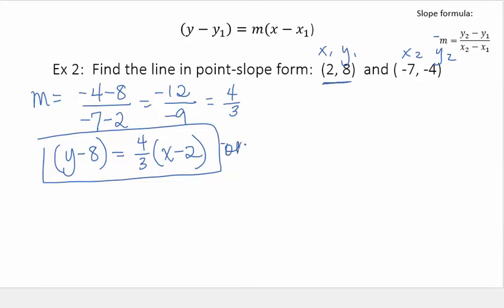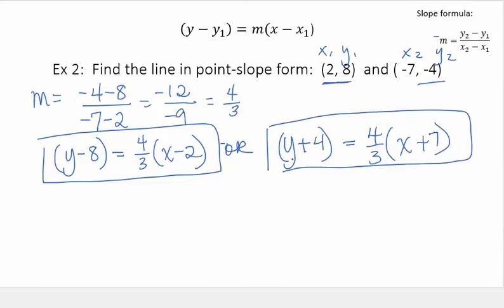The other one using this point. Y minus the y, which was negative. So minus a negative means plus 4, equals 4 thirds x minus negative 7 means plus 7. So again, depending on which point you use for your point-slope form, you may have one of these two answers, and both are correct. You don't have to find both, but you've got to find one of the two.